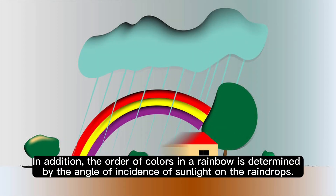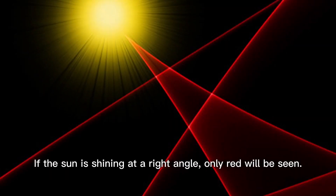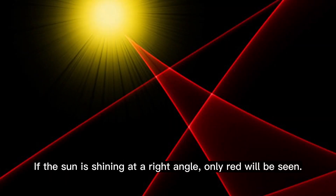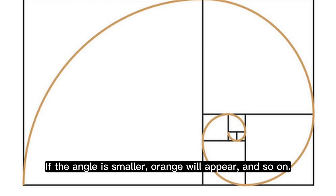In addition, the order of colors in a rainbow is determined by the angle of incidence of sunlight on the raindrops. If the sun is shining at a right angle, only red will be seen. If the angle is smaller, orange will appear, and so on.